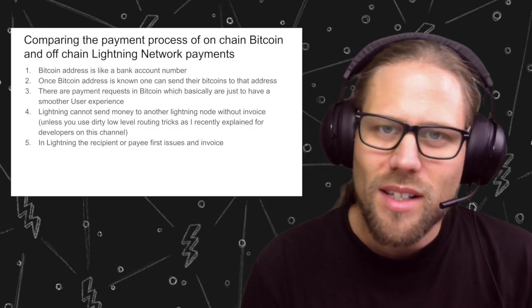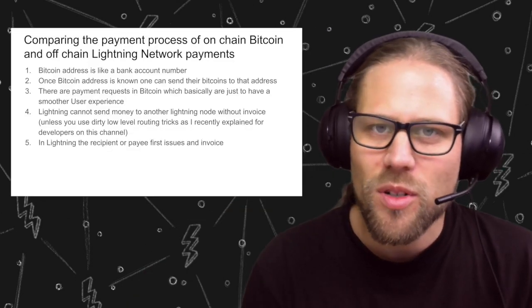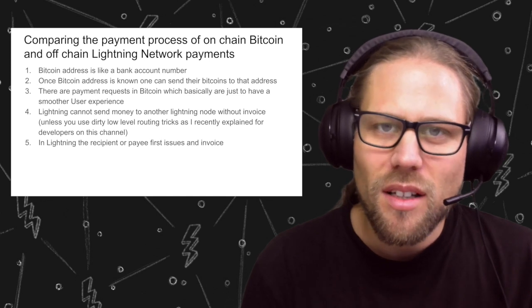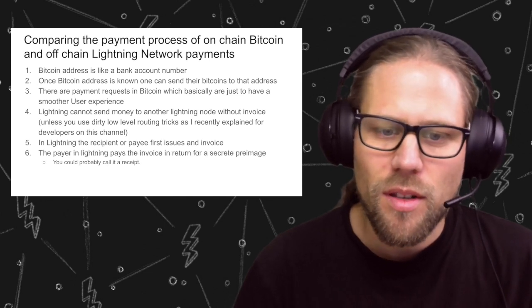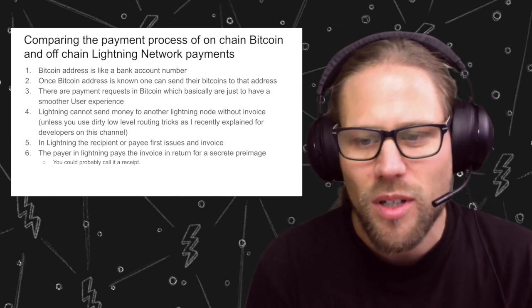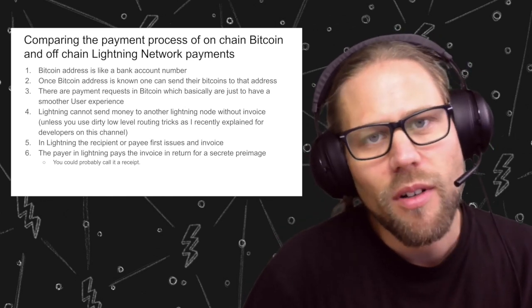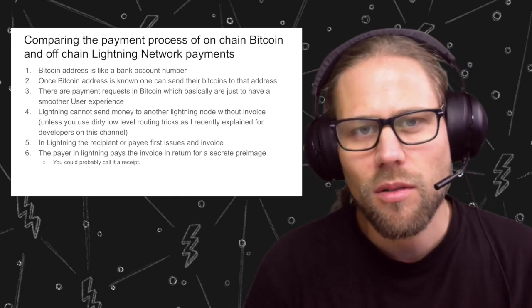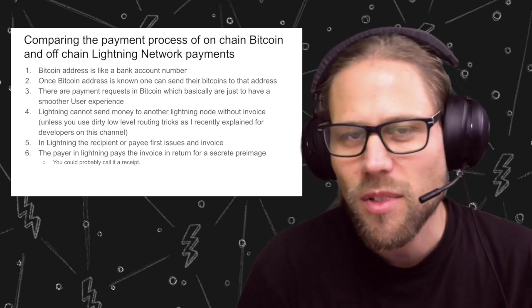In Lightning, the payee — the person who receives the money — basically issues an invoice and gives it to the sender. The payer pays the invoice in return for a secret pre-image, and you could call this pre-image just a receipt.